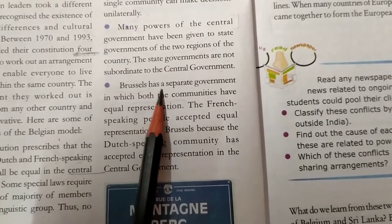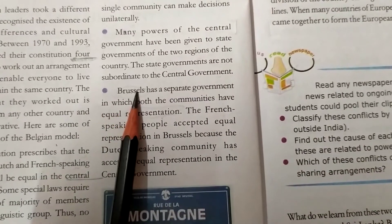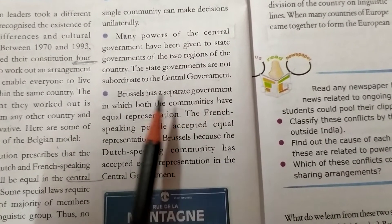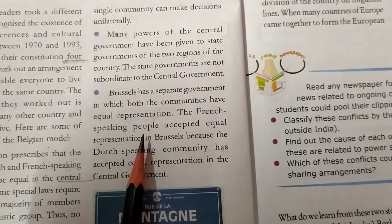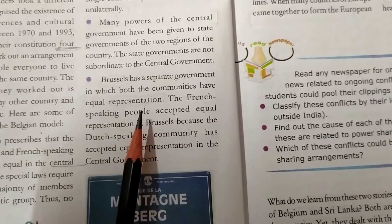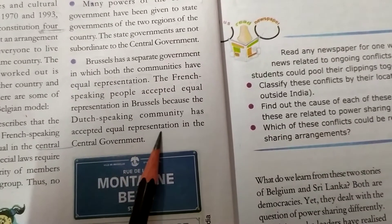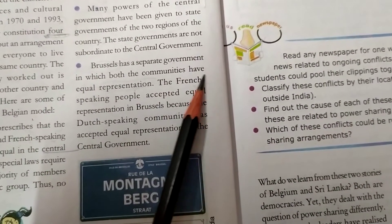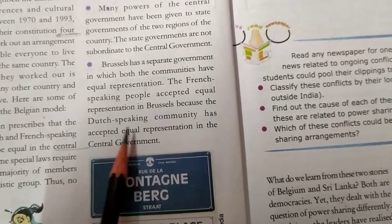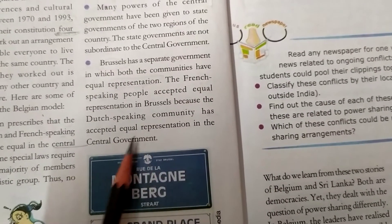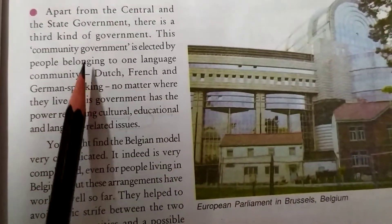Brussels has a separate government in which both communities have equal representation. The French-speaking people accepted equal representation in Brussels because the Dutch-speaking community accepted equal representation in the central government, which was discussed in the first point.